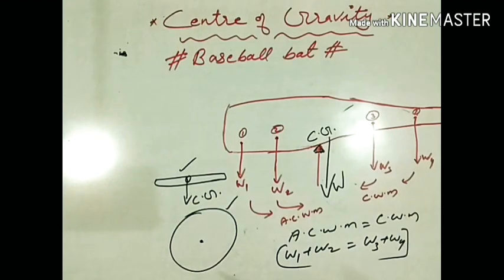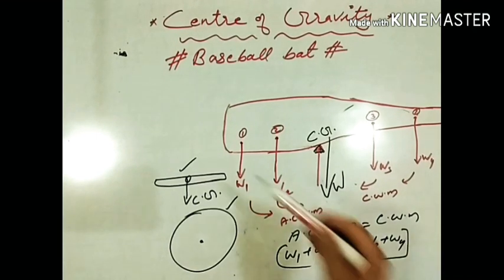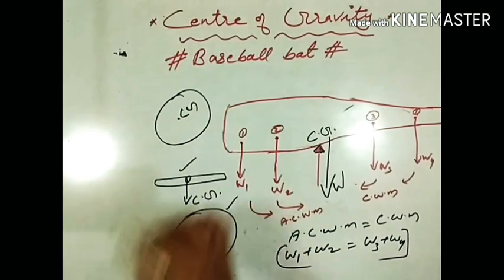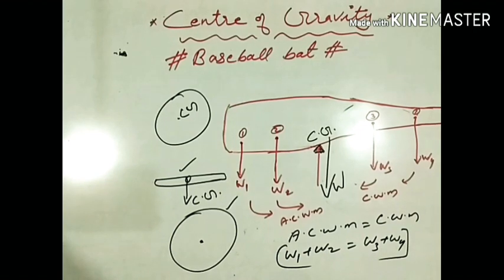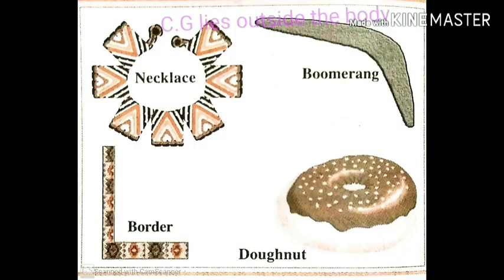It is not necessary that the center of gravity always be within the material of the body. The center of gravity of a ring or a hollow sphere lies at the center. Even when there is no material inside, the center of gravity may lie inside the hollow sphere. All of you like donuts, right? Have you ever thought where is the center of gravity of the donut lying? It is lying at the middle of the donut, where there is no donut stuff. There are many more examples in our day-to-day life in which the center of gravity lies outside. For example, a necklace, boomerang, border, donut, etc.